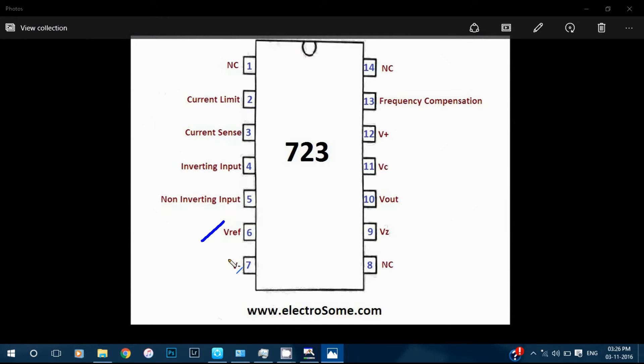The sixth pin is the Vref. It is the reference voltage output of the IC, the output of the voltage reference amplifier. Its output voltage is about 7.15V.